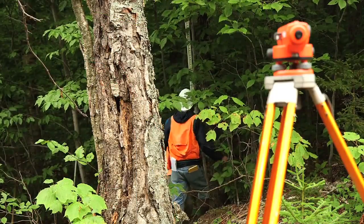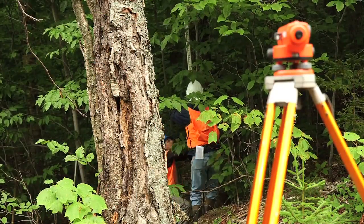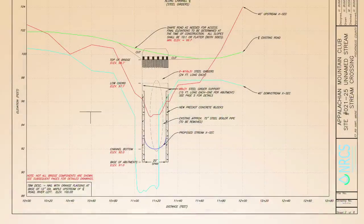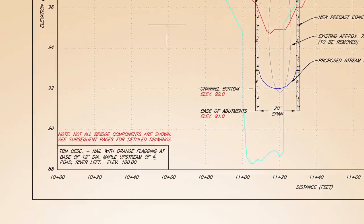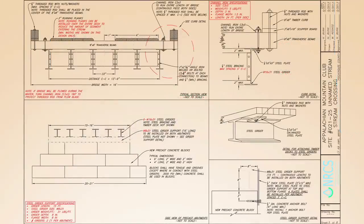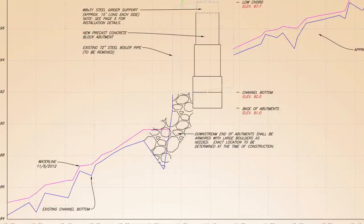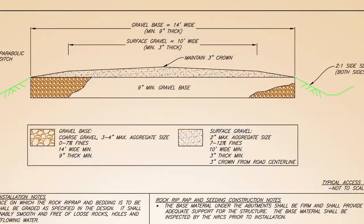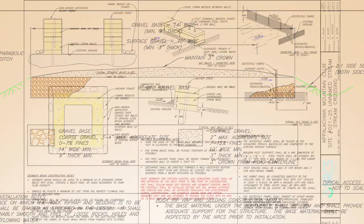All elevations are established from a benchmark that was set during the initial design survey. The benchmark description is provided on the construction drawings. Other sheets of the construction drawings include specific details for the assembly of the bridge components and the specific requirements for water, erosion, and sediment control. The construction drawings should be provided to and reviewed with the contractor prior to construction.